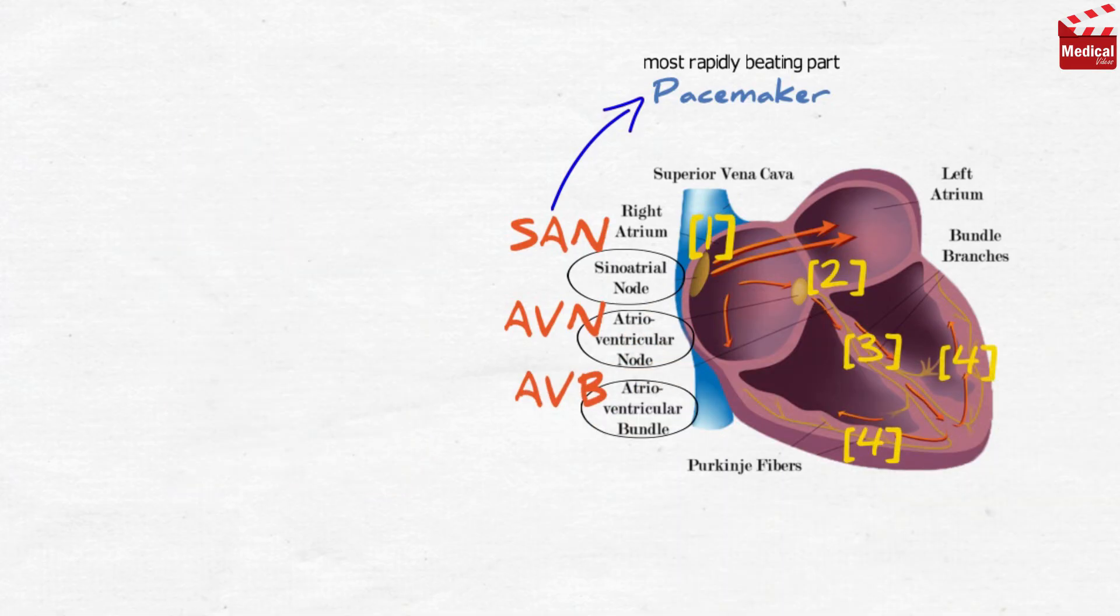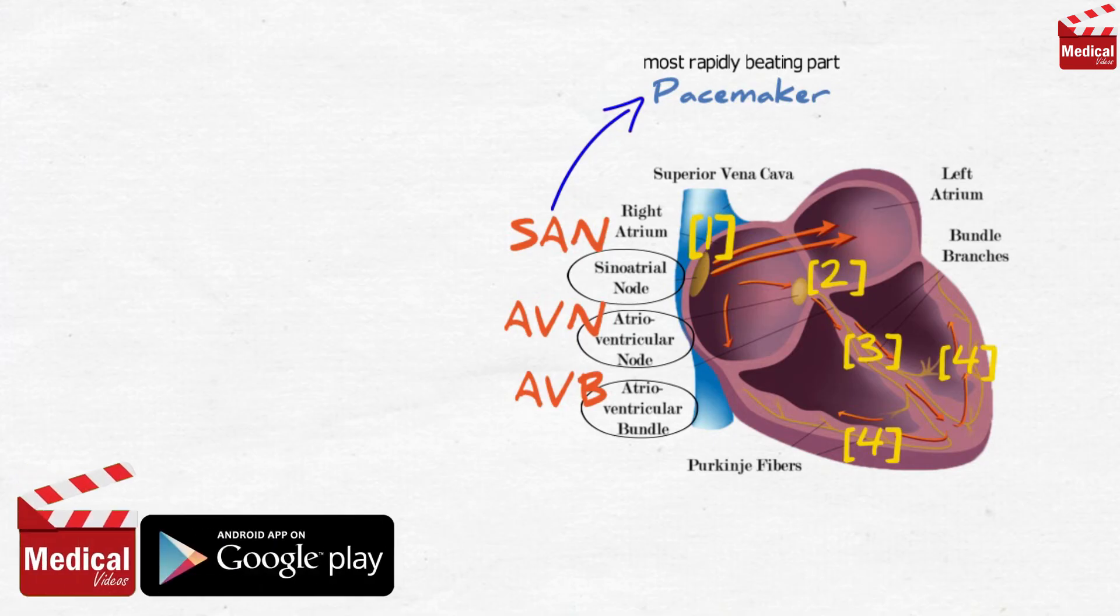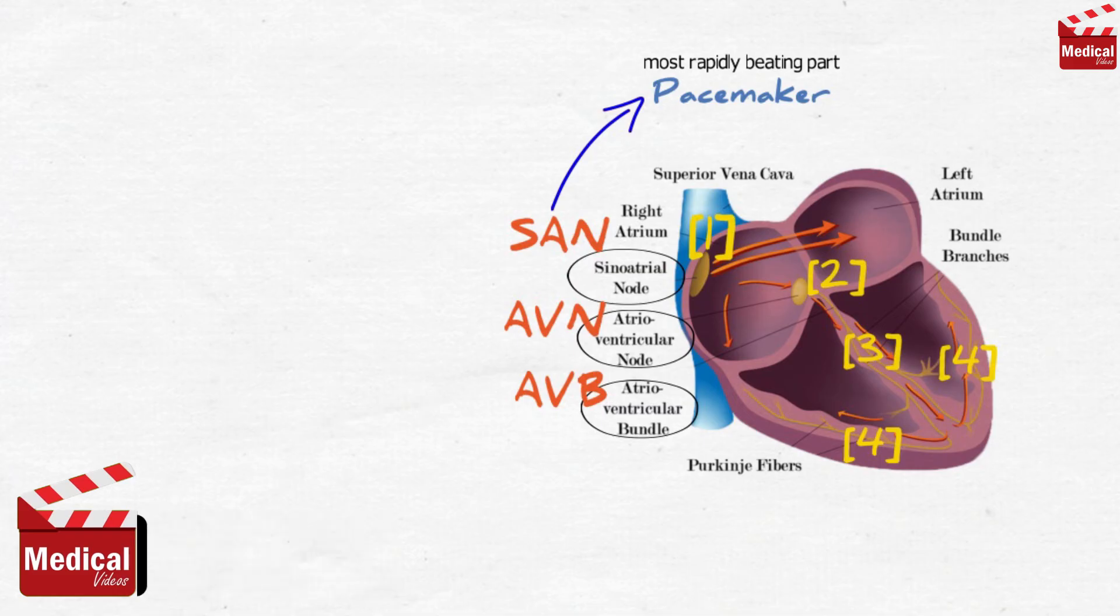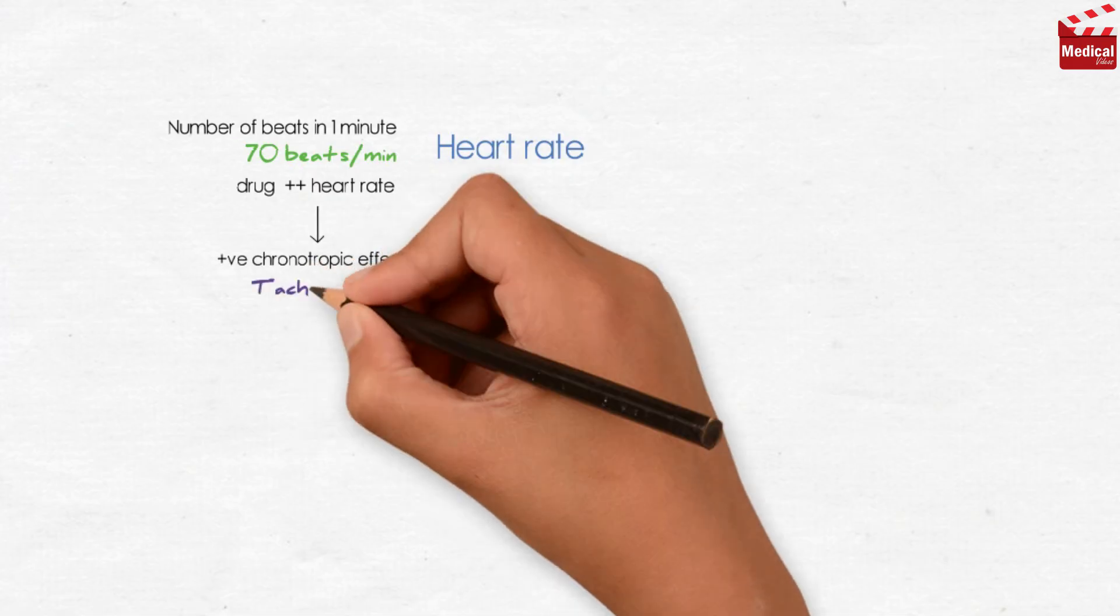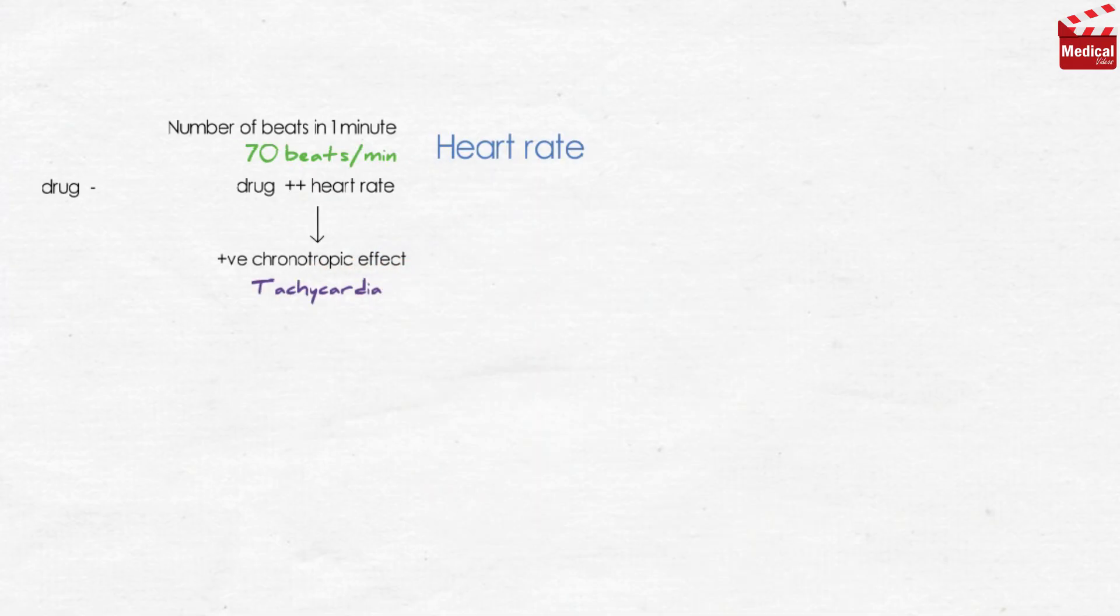Finally we'll talk about some important definitions that will be extensively used in the next lectures. The first one is the heart rate. It is the number of beats in one minute, normally it is 70 beats per minute. If a drug increases the heart rate, it is said to have positive chronotropic effect, or known as tachycardia. And if a drug decreases the heart rate, it is said to have negative chronotropic effect, or known as bradycardia.